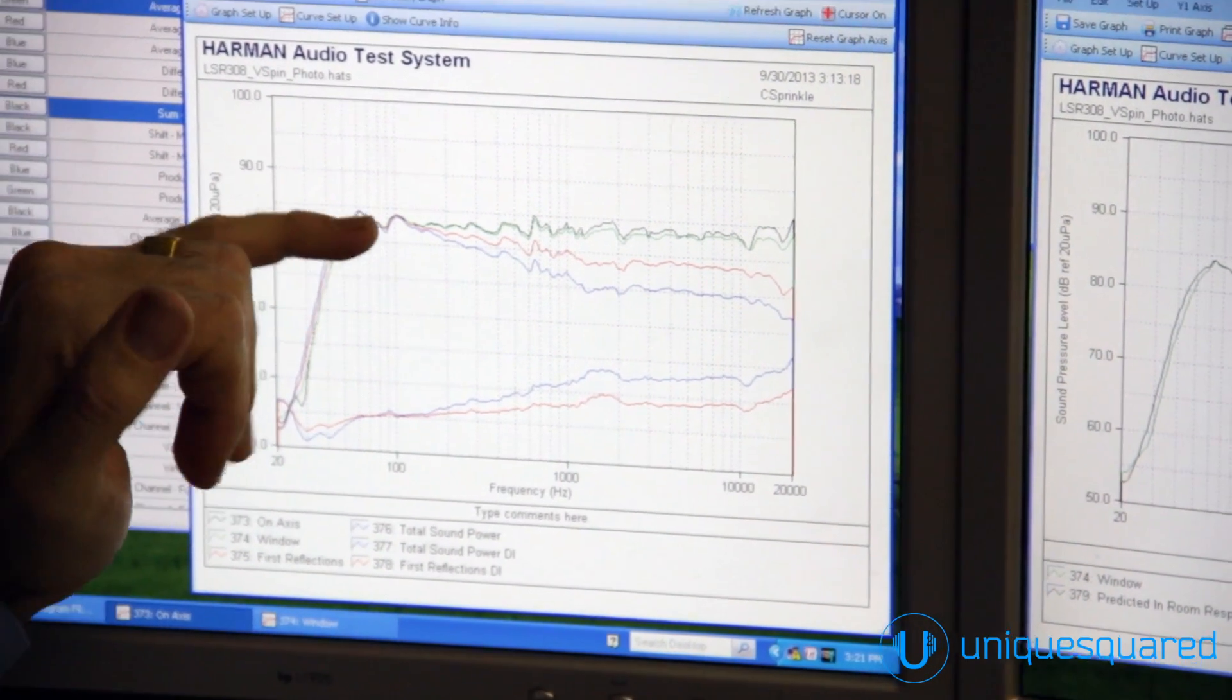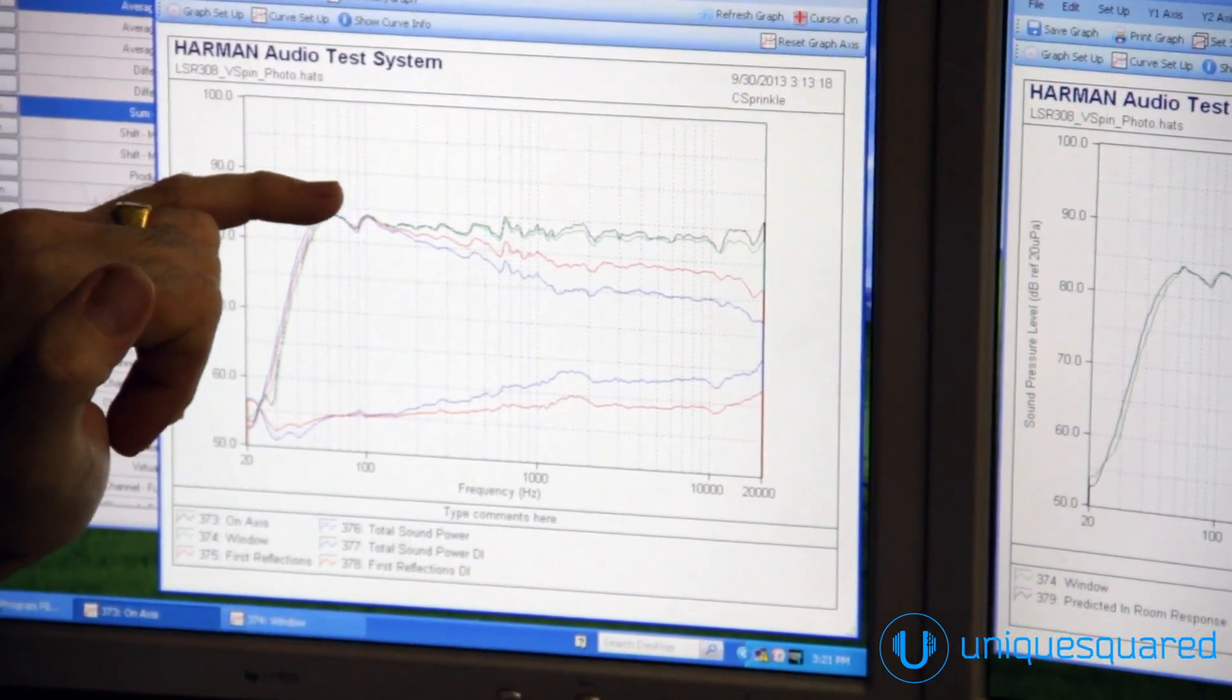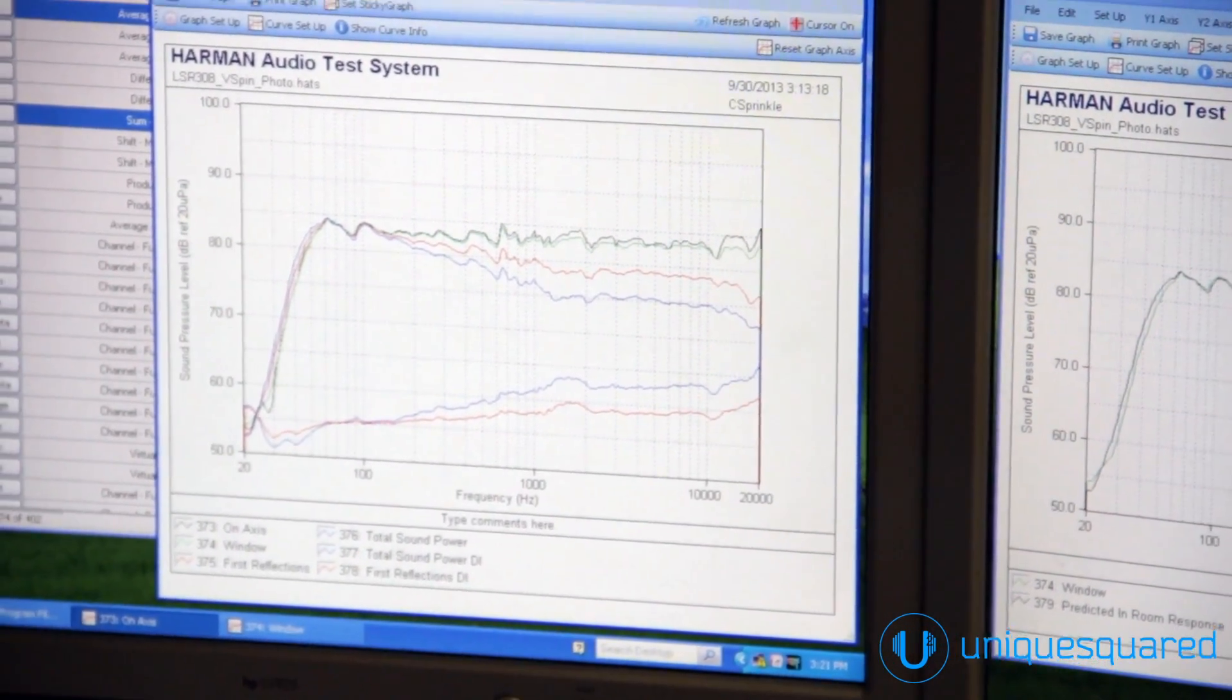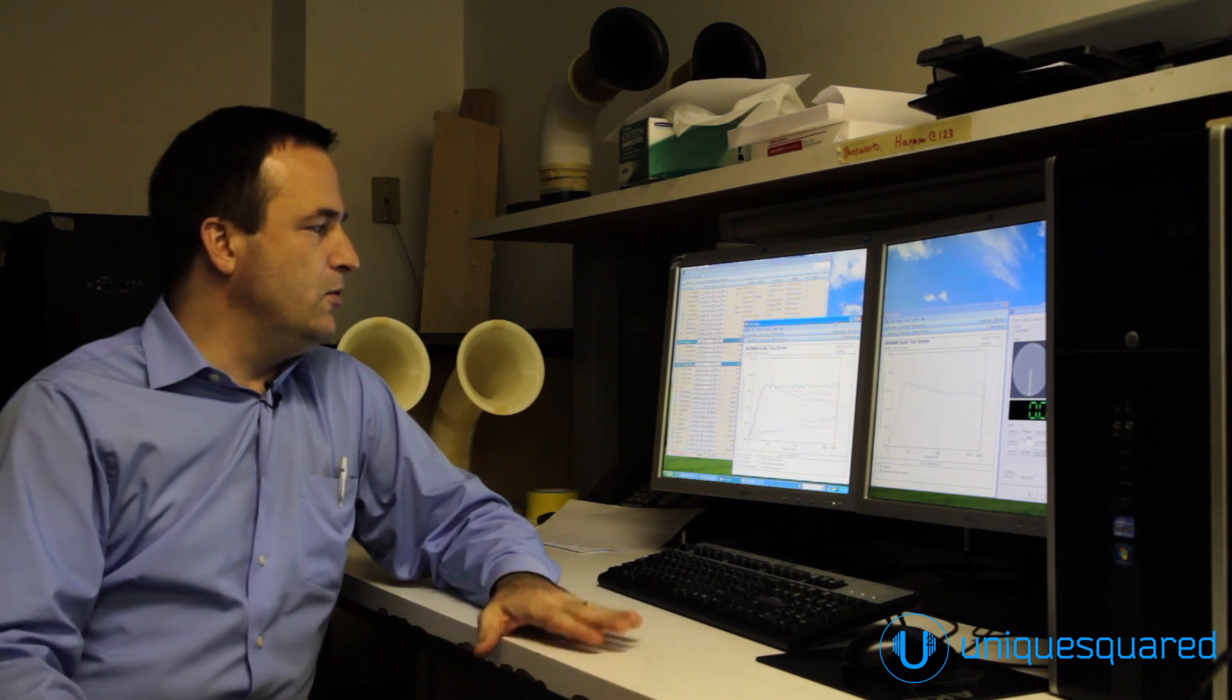The black curve on the top is the direct sound. This is what is picked up directly on axis of the loudspeaker. The green curve is what we call a listening window, and that is a combination of measurements, plus or minus 15 degrees horizontal, plus or minus 10 degrees in the vertical plane.